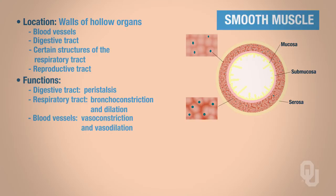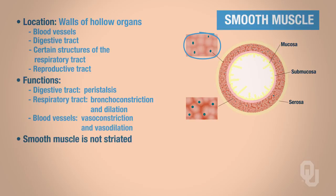Those are a few examples of location and function for smooth muscle. Next, I would like to provide an overview of smooth muscle structure. We will begin with what is called striations. When you look at this picture, we don't see any striations — in other words, there are no lines running through this muscle. Hence, smooth muscle is not striated; it is smooth.